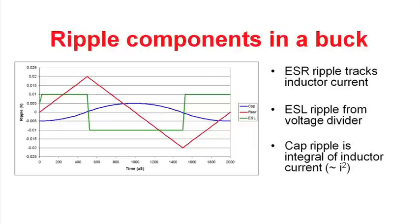The second curve is the ripple voltage that's associated with the ESL of the inductor. And that's shown in green. The ESL component is simply a voltage divider between the output inductor in your buck regulator and the ESL of the output capacitor. And you can see that it's a square wave.